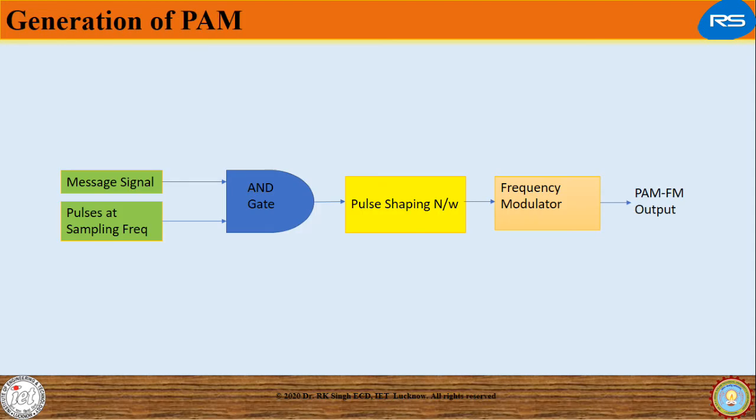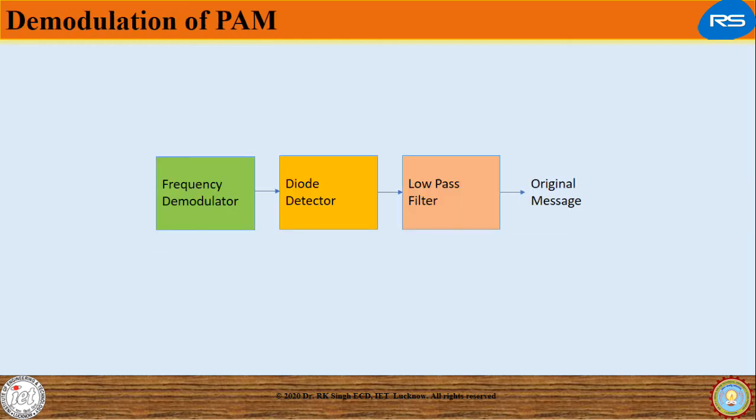This is the generation of PAM. It utilizes AND gate pulse mapping network and frequency modulator to generate PAM FM output. This generated output is fed to the demodulator which consists of a frequency demodulator and diode detector and a low-pass filter. In this way, we can have the original message signal.